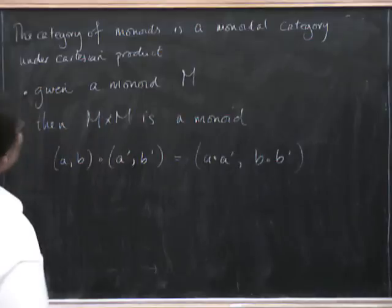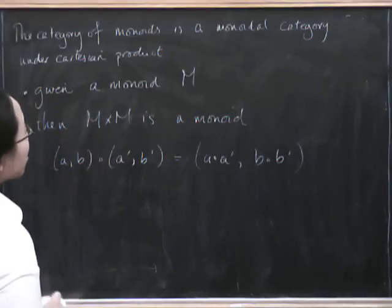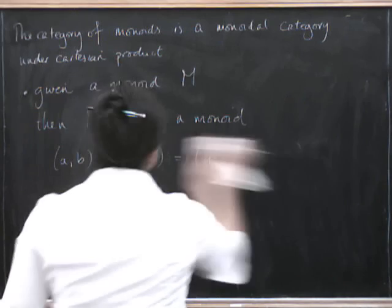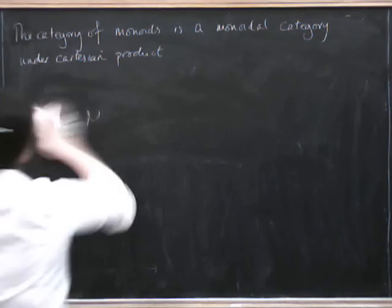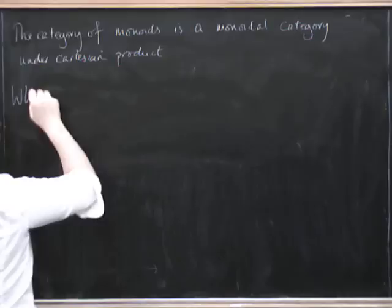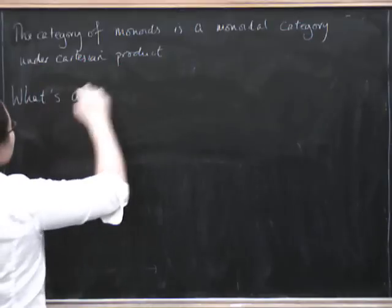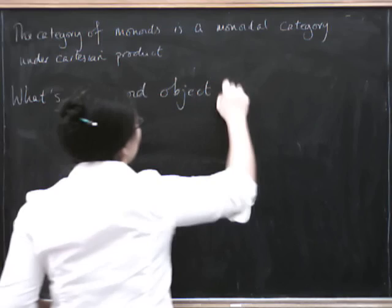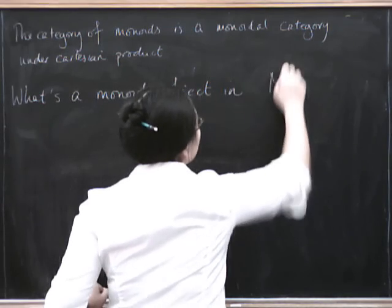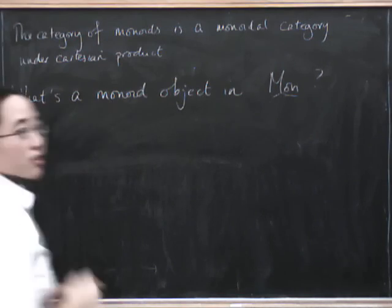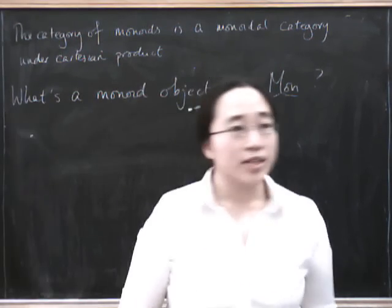So then what does it mean for this to be a monoid object? For something to be a monoid object in this monoidal category. So what's a monoid object in monoids? Well, it's got to be an object equipped with a unit and a multiplication.